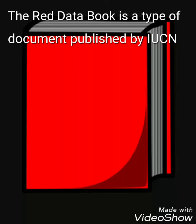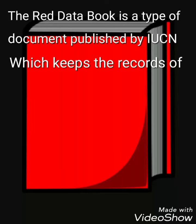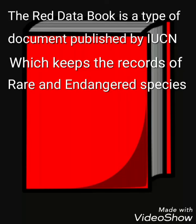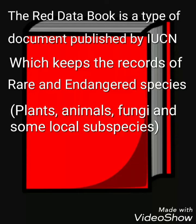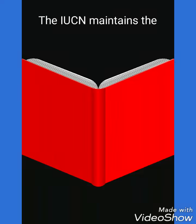The Red Data Book is a type of document which gives the records of all the rare and endangered species, which includes the plants, animals, fungi and some local subspecies.